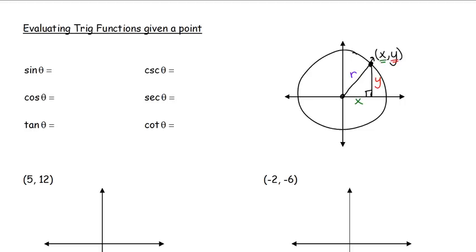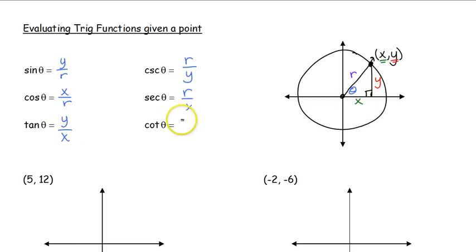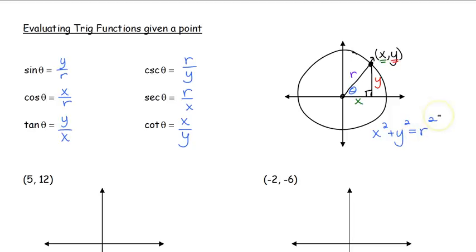So this would be our theta. Sine of theta is opposite over hypotenuse: y over r. Cosecant is the reciprocal: r over y. Cosine is adjacent over hypotenuse: x over r. Secant is the reciprocal: r over x. Tangent is opposite over adjacent: y over x. Cotangent is the reciprocal: x over y. We also have a right angle, so we can use the Pythagorean theorem — x squared plus y squared equals r squared.